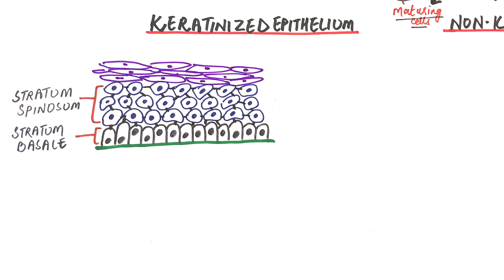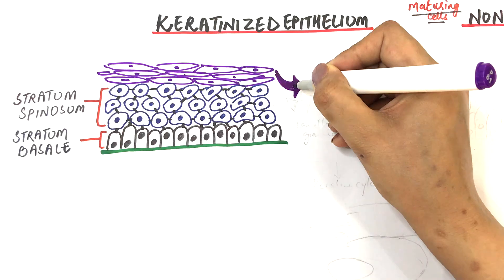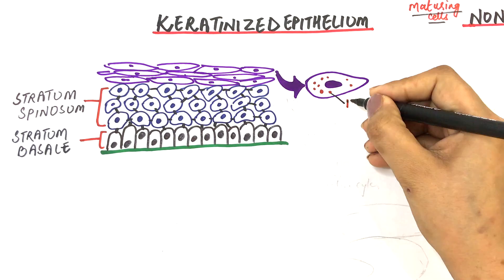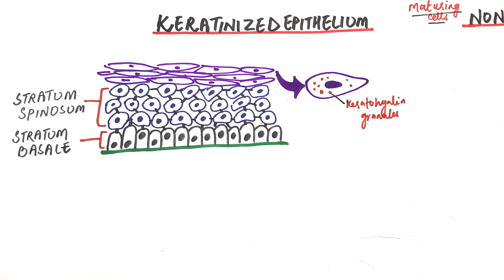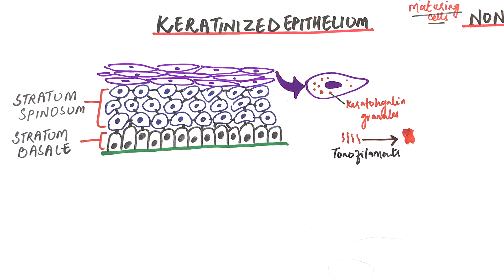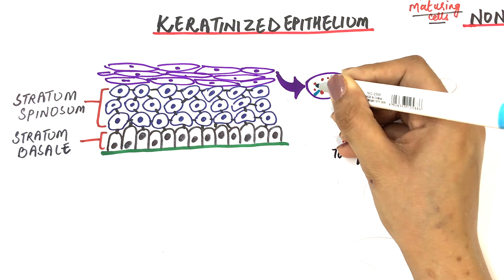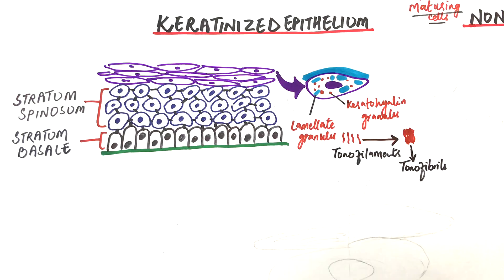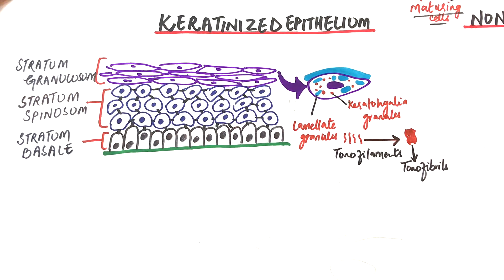The next layer consists of larger and flattened cells containing small basophilic granules that stain intensely with acid dyes. This layer is called the granular layer, or the stratum granulosum, because of the presence of the keratohyaline granules. The main function of these keratohyaline granules is to bind the intermediate keratin filaments, known as the tonofilaments, into the tonofibrils. The cells of the granular layer also contain lamellar granules, which fuse with the cell membrane and release their lipids within the intercellular space, forming a strong permeability barrier.